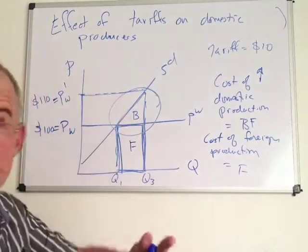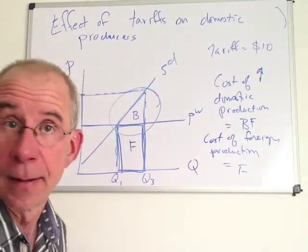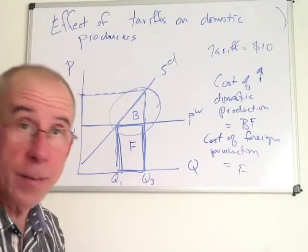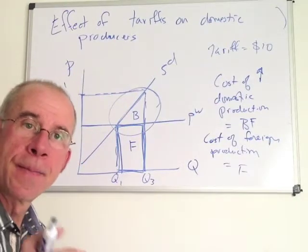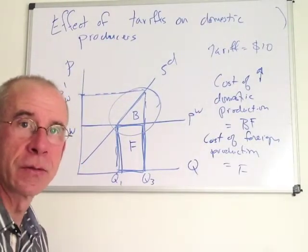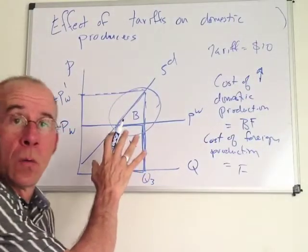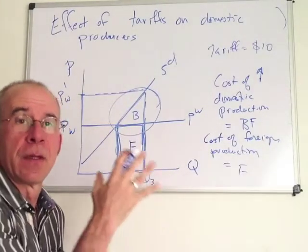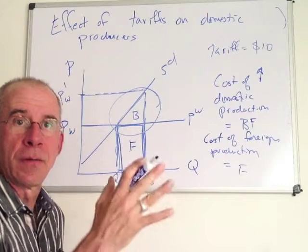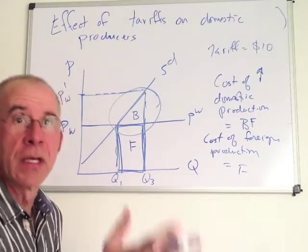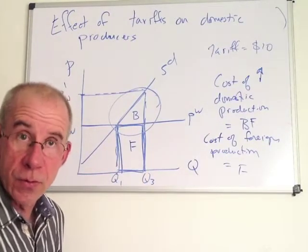Now, that comes as a consequence of having higher producer surplus, higher employment, that's all good. But it does come at a cost, and this is one of the principal measures of it. The cost of getting it from a domestic source is higher than the foreign source.